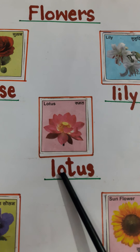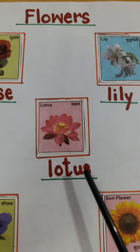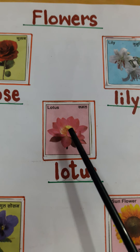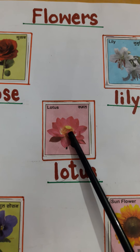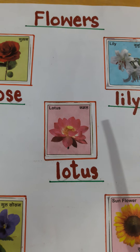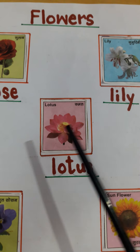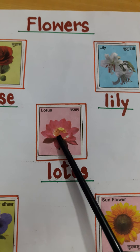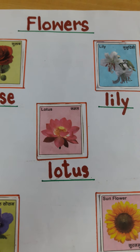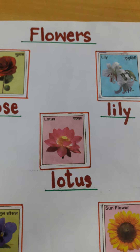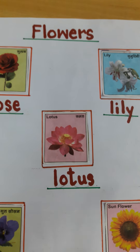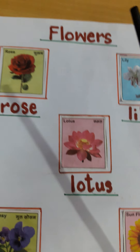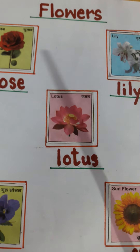L-O-T-U-S. Lotus. Lotus means kamal ka phool. And this is the lotus. Kya hota hai? Pink color ka hota hai. Lotus kya hota hai? Our national flower hai. Lotus is our national flower.